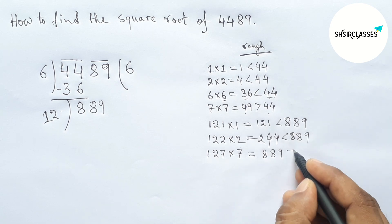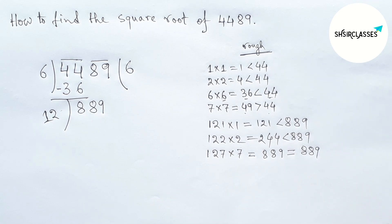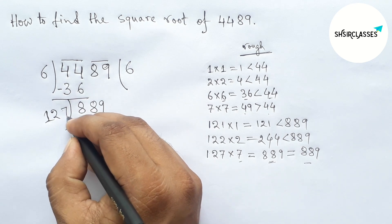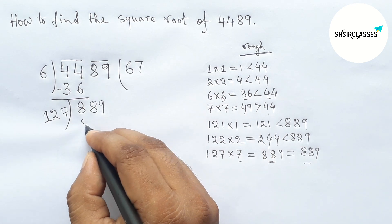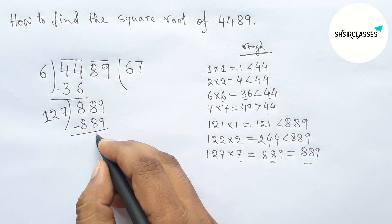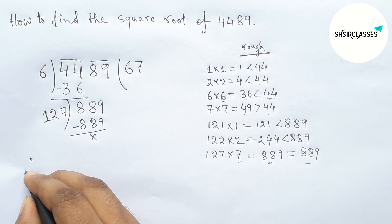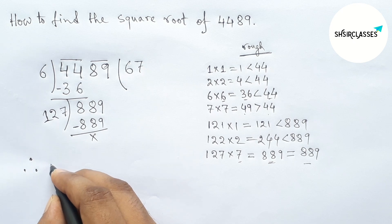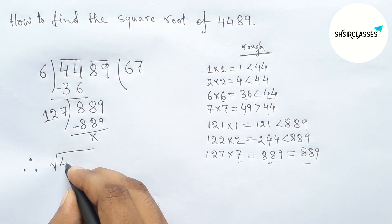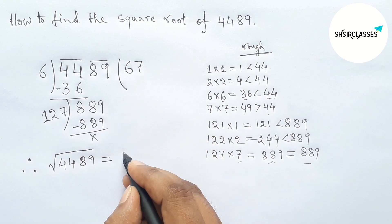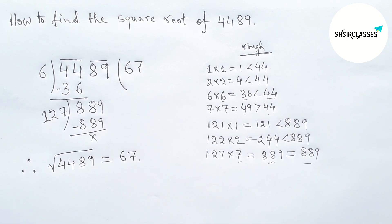Which is greater than or equal to 889, so the end. Therefore, the square root of 4489, therefore here, square root of 4489 equals this, 67. So that's all. Thanks for watching. Please share it with your friends.